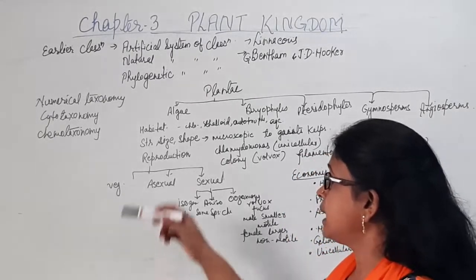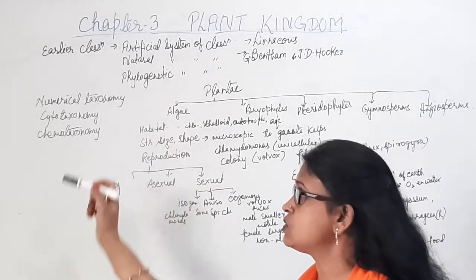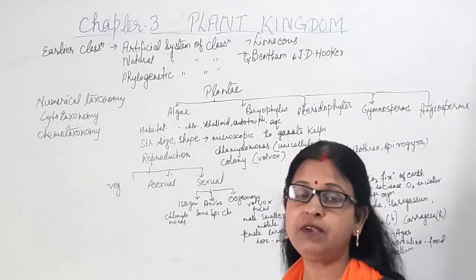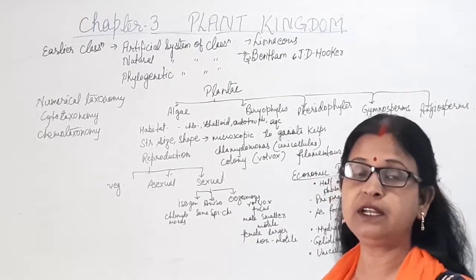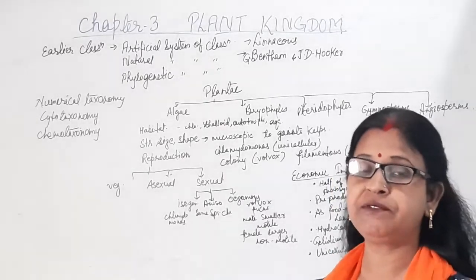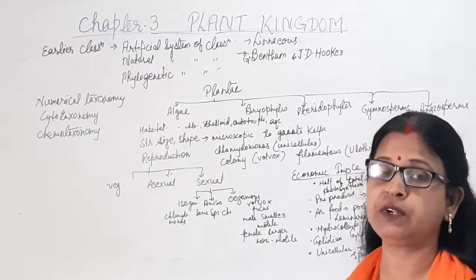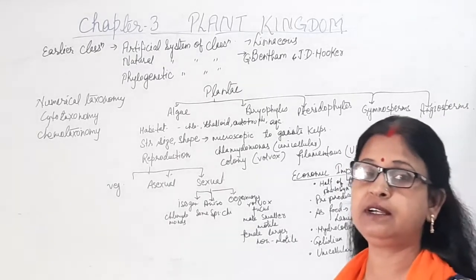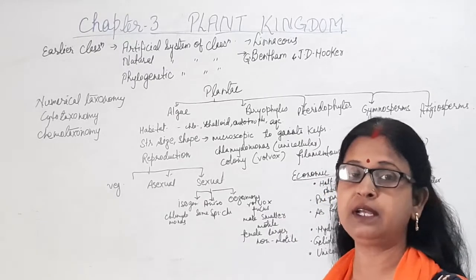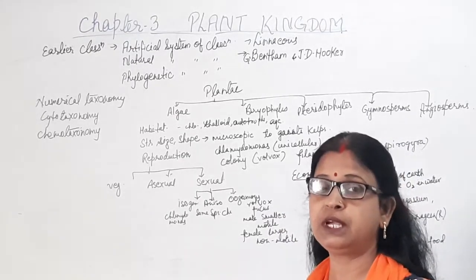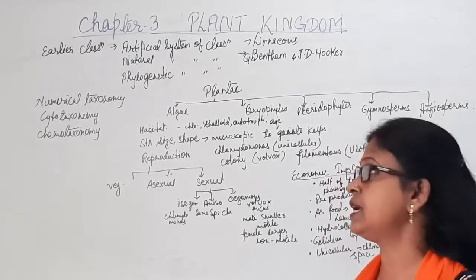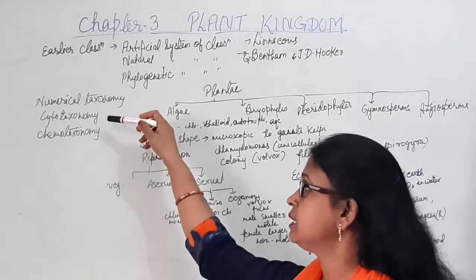Then taxonomy was further developed using numerical taxonomy, cytotaxonomy, and chemotaxonomy. Numerical taxonomy uses computational devices and computers for analysis and interpretation of data, where each and every character of the plant is given equal importance for classification.